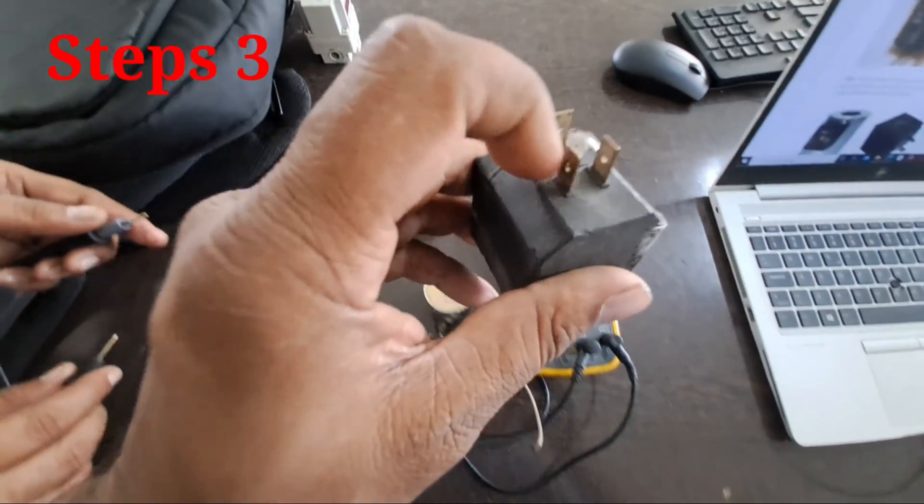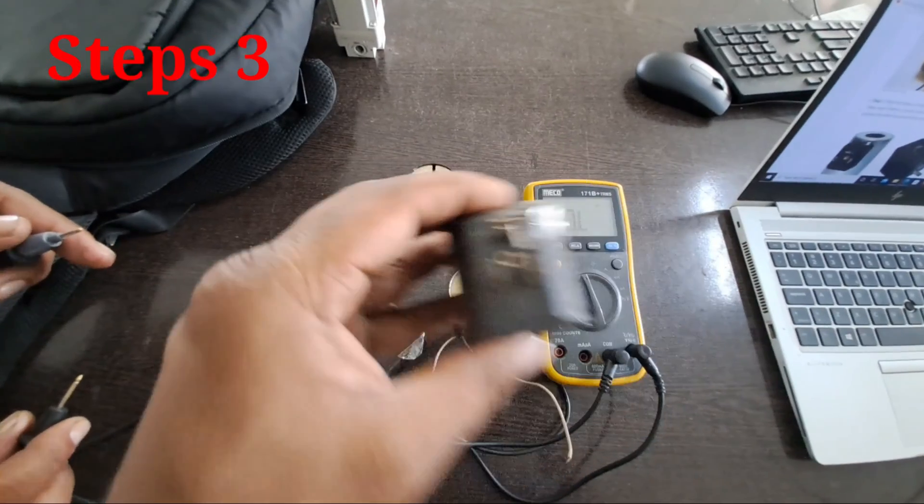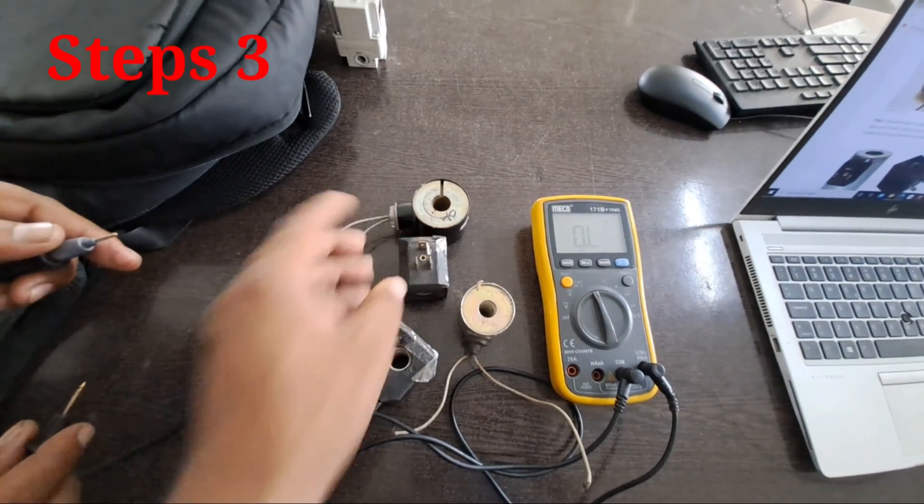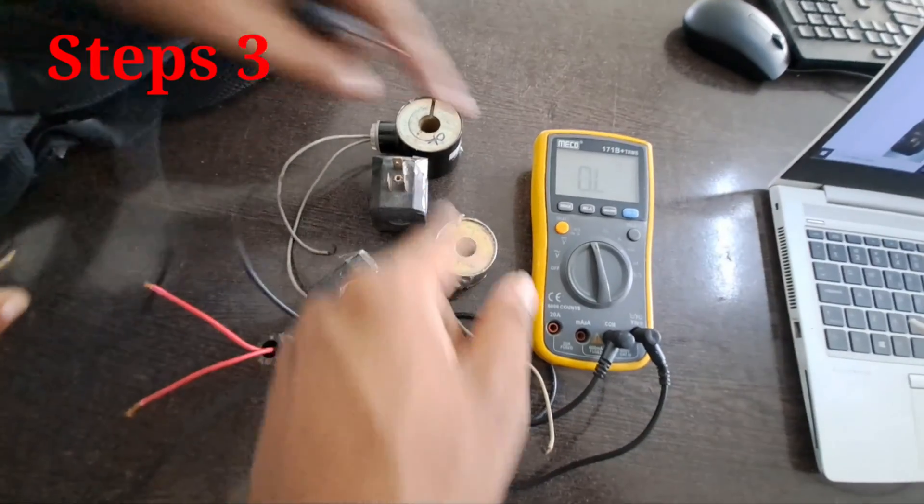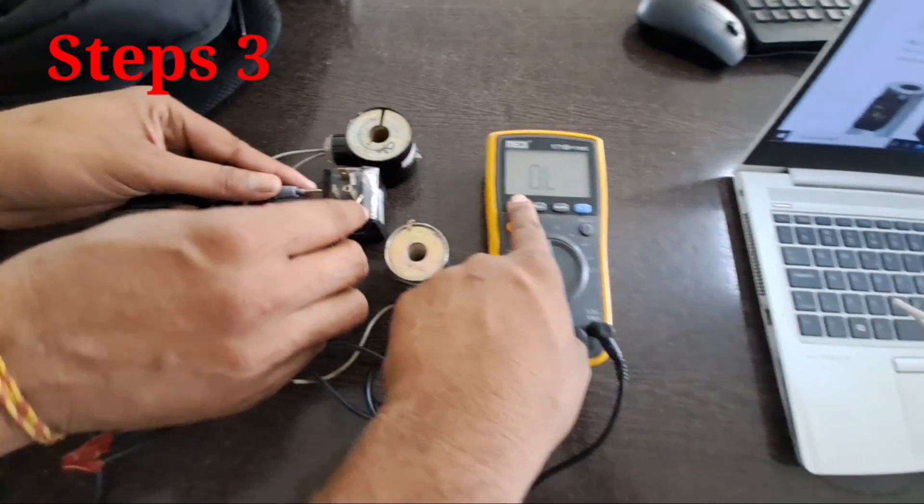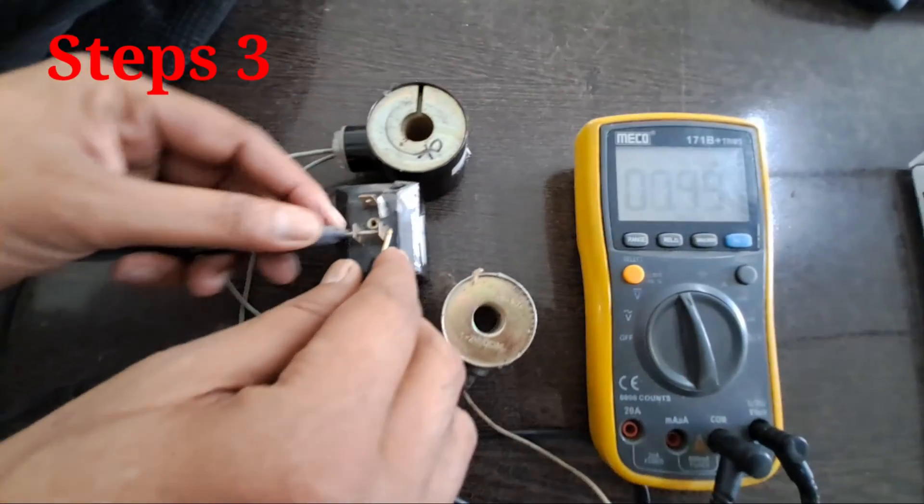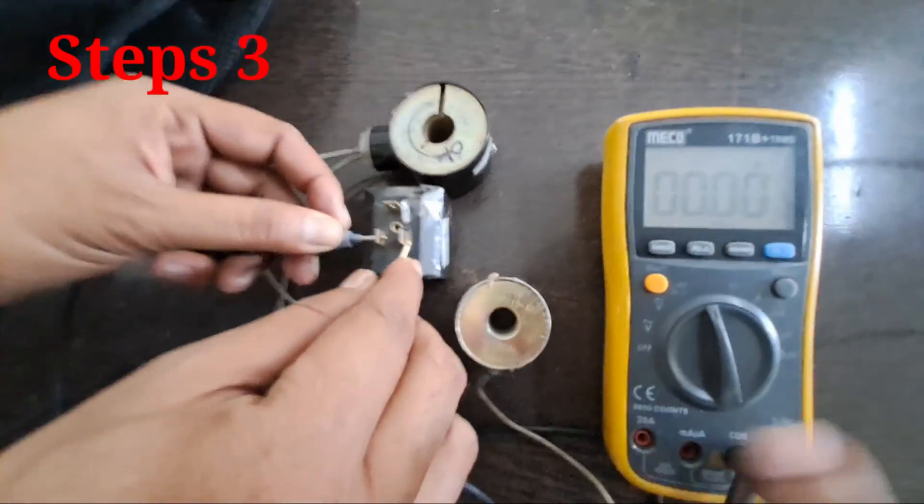Step 2: Place the probes of multimeter across the pins of a solenoid coil. If you find three pins there, one of them is a flat pin which is connected to the ground. What you need to do is connect the other two pins with the multimeter.